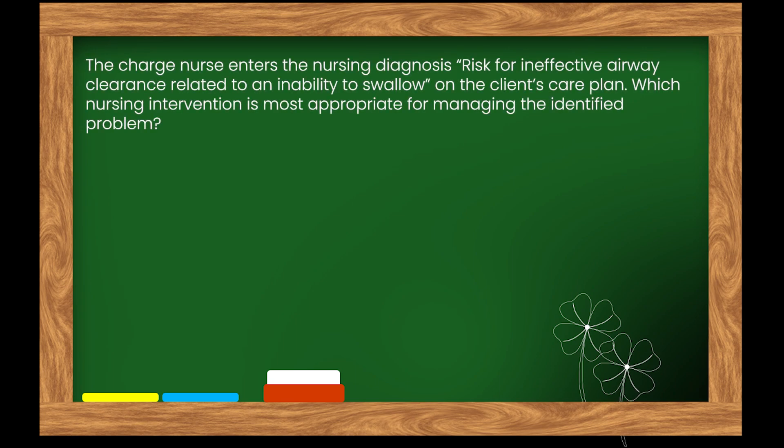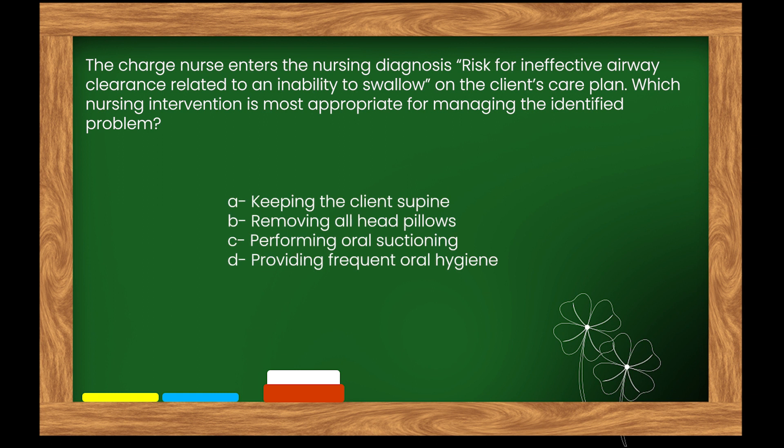The charge nurse enters the nursing diagnosis, risk for ineffective airway clearance related to an inability to swallow, on the client's care plan. Which nursing intervention is most appropriate for managing the identified problem? Options: A. Keeping the client supine. B. Removing all head pillows. C. Performing oral suctioning. D. Providing frequent oral hygiene.